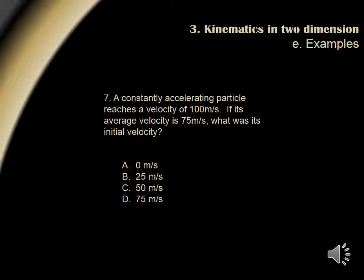Question 7. A constantly accelerating particle reaches a velocity of 100 meters per second. If its average velocity is 75 meters per second, what was its initial velocity? Using average velocity equals initial velocity plus final velocity over 2, we can solve for our initial velocity, where we get an initial velocity equal to 50, or answer choice C.